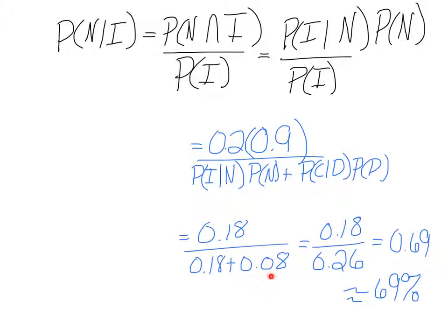We get 0.08 there, and when we add those together we get 0.26. Then we do go ahead and divide that and we get approximately 69% of the time the person is actually blonde and you guessed correctly about that.